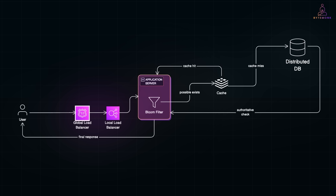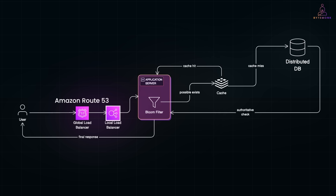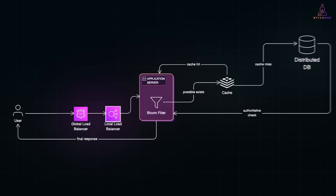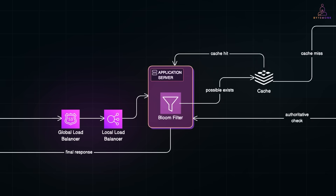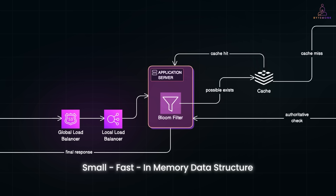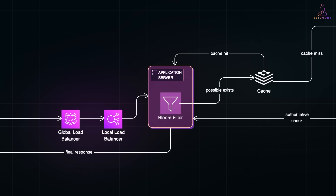Global load balancing, or edge-level load balancing, uses DNS-based or anycast routing to direct user requests to the closest regional data center. For example, a user in Europe gets routed to an EU-based data center rather than one in the US. In AWS, global load balancing is typically handled by Amazon Route 53. Inside each data center, a local load balancer like Nginx or AWS ELB distributes traffic among several backend servers or service instances. These backend servers run application logic, including the Bloom filter and cache queries. A Bloom filter is typically not a standalone server, but rather a small, fast, in-memory data structure that sits within your application servers. Usually, each backend server maintains a copy of the Bloom filter in memory, synchronized periodically from a central source or rebuilt regularly from the database.